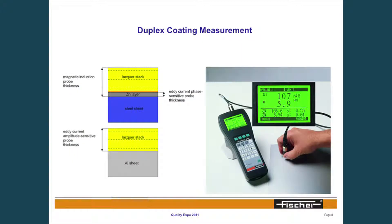Another example where the phase-sensitive method would be best suited is a duplex coating in the automotive market — measuring the galvanized coating applied first and then the paint on top, and differentiating those layers to determine each part of your process. The phase-sensitive method can do that, in addition to measuring paint on aluminum, paint on steel, or differentiating multilayers of paint and zinc simultaneously on one instrument.